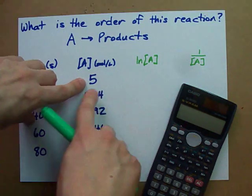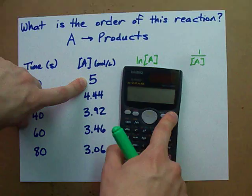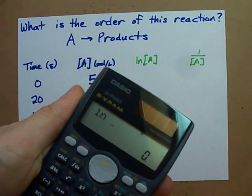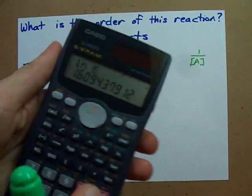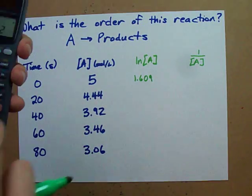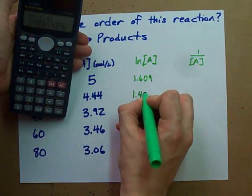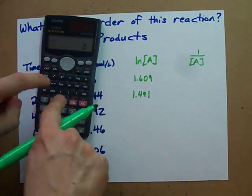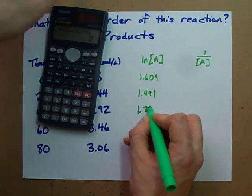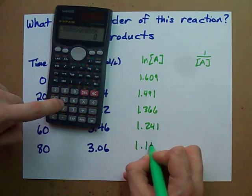In the ln[A] column, take the natural log of whatever is in your reactant concentration column. Take ln(5) — that's 1.609. Then ln(4.44) gives 1.491. Continuing for all other concentrations: 1.366, 1.241, and 1.118.